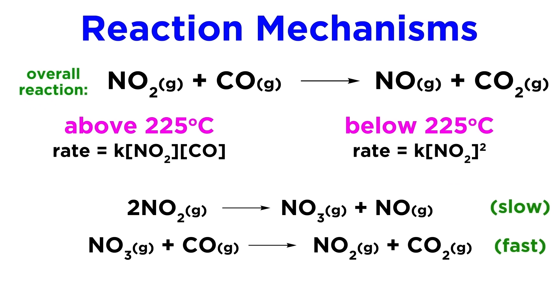Instead, a mechanism like this makes more sense. As we can see, the first step is the rate-determining step, and the rate law we could derive from the stoichiometry of this elementary reaction will match the rate law for the overall reaction below a certain temperature.